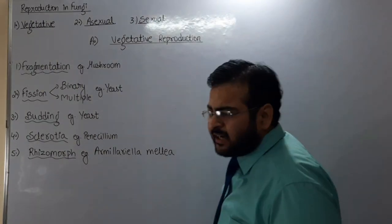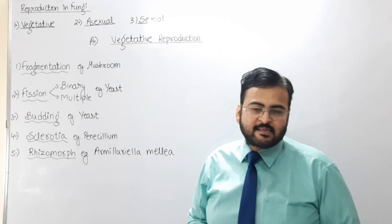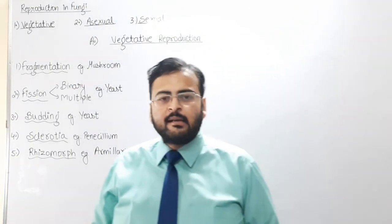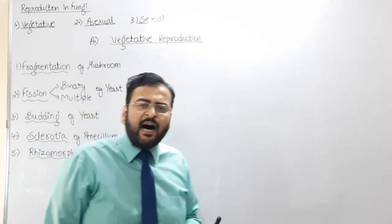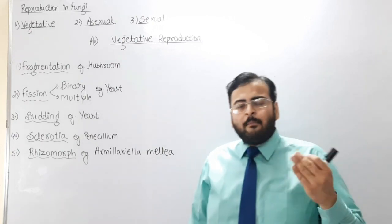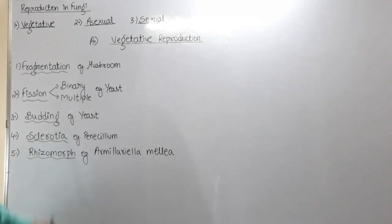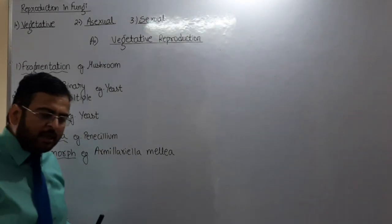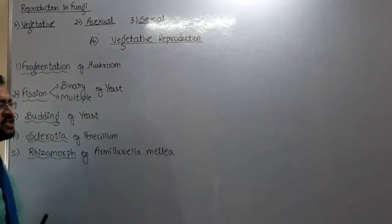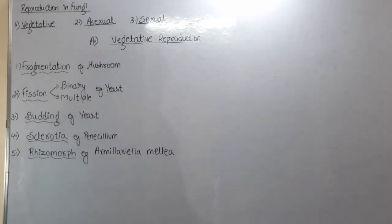Now let's move to vegetative reproduction in fungi. If reproduction takes place with the help of somatic cells, then it is considered as vegetative reproduction. Vegetative reproduction uses only somatic body parts — there will be no use of sexual parts. The reproduction which takes place with the help of somatic cells or vegetative parts is known as vegetative reproduction, and it occurs by five methods.